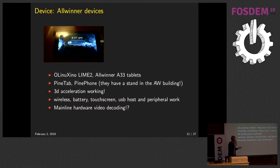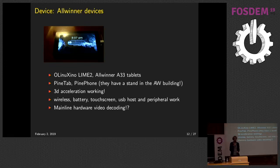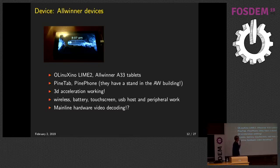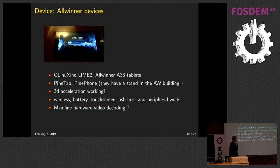There's also an entire set of Allwinner devices that are kind of supported but may need some extra work depending on the device. Allwinner is a Chinese company that makes cheap ARM chips. They were never particularly good at supporting mainline Linux, but there's a huge community around them that — without Allwinner participating — makes sure mainline works really well on these devices. There are OLinuXino boards similar to a Raspberry Pi or Pine64, and some cheap tablets around 50 euros. There's now an open-source 3D driver for them plus open-source hardware video decoding.